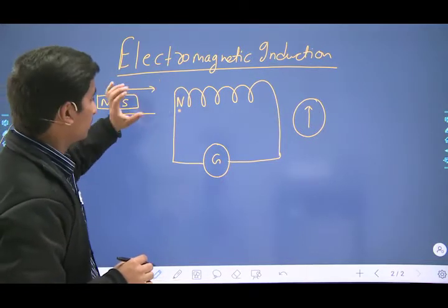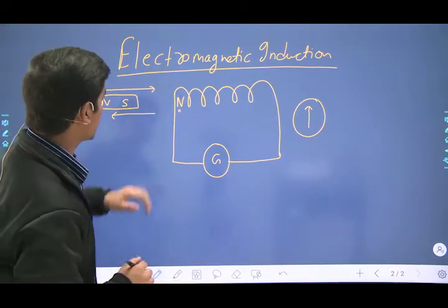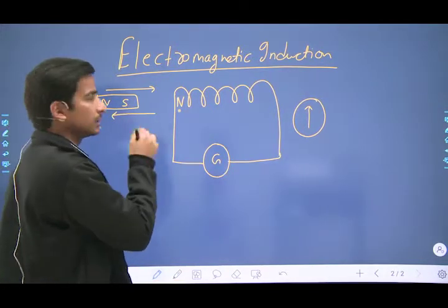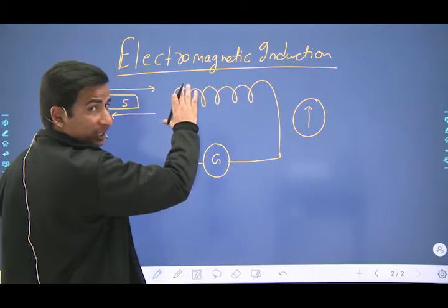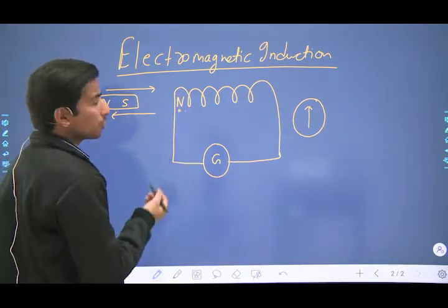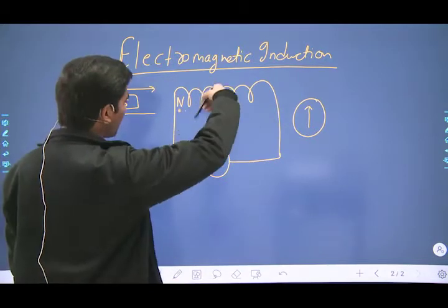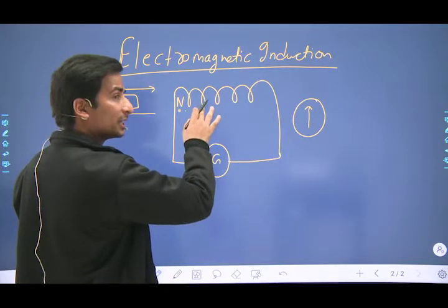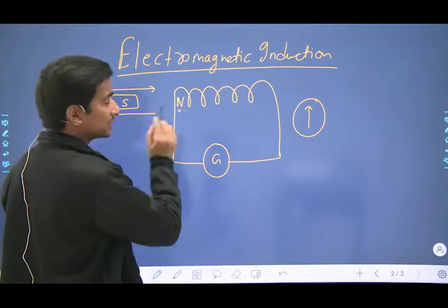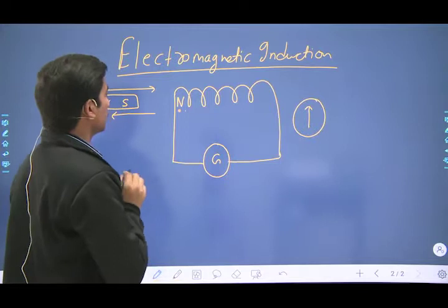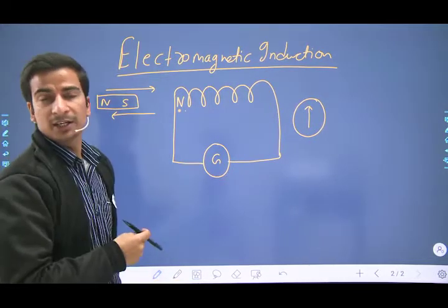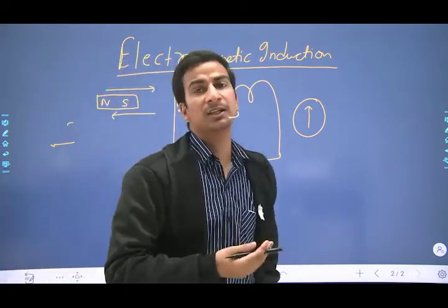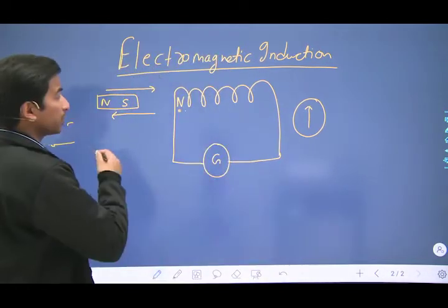If this pole is north, then in bringing the south pole towards the north pole, there will be no external work done. Aapko bahar se koi bhi work karne ki zarurat nahi hai, kyunki north pole south ko automatically attract karta hai. It means the current in the coil would develop automatically without consuming any work — aur yahi wajah hai ki yuh conservation of energy ko violate kar deti hai. Conservation of energy ke according, aap kisi system ki energy tab tak increase nahi kar sakte jab tak hum us par kuch work na karein.